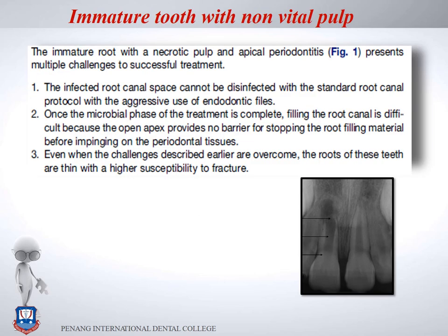When an immature tooth has a non-vital pulp and apical periodontitis, there are multiple challenges. The infected root canal cannot be disinfected with standard protocols because aggressive filing further weakens the thin root walls. Once microbial treatment is complete, filling is difficult because the open apex provides no barrier to stop root filling material from impinging on periapical tissue. Additionally, the thin roots have high susceptibility to fracture.